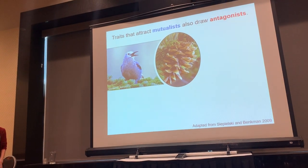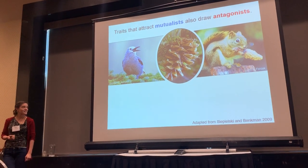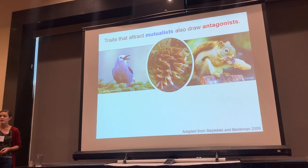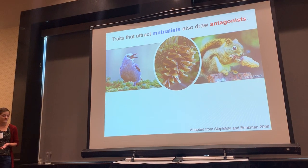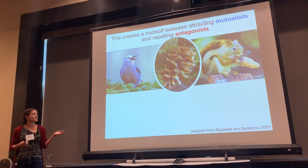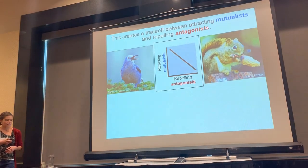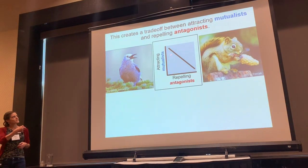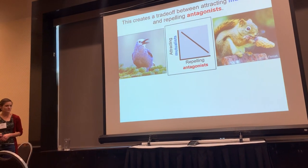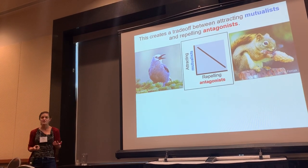This mutualism is no exception. Limber pines are attacked by arguably the world's most adorable seed predator, the red squirrel. This squirrel also eats limber pine cones, but it harvests those cones before they're ripe, so any seeds in squirrel-harvested cones aren't going to germinate. If you're a limber pine tree, this sets up a tradeoff between attracting mutualists that disperse your seeds and repelling antagonists that harm your reproductive success. Individuals or genotypes that are really good at attracting mutualists are really bad at repelling antagonists, and vice versa. Circumstantial evidence across many systems in plants and animals suggests these tradeoffs might be really common.